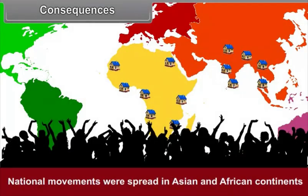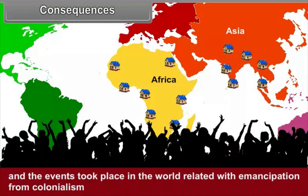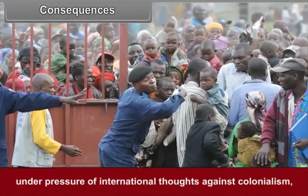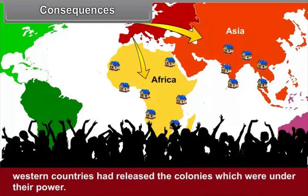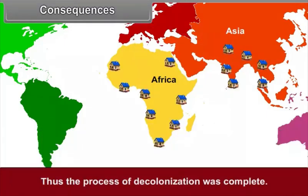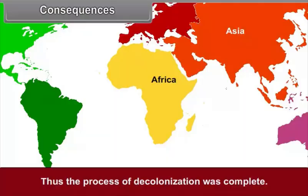National movements spread in Asian and African continents and events took place in the world related to emancipation from colonialism. Under pressure of international thoughts against colonialism, Western countries released the colonies which were under their power. Thus, the process of decolonization was completed.